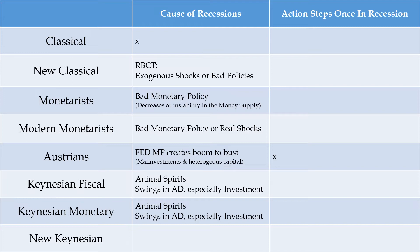Keynesian activist monetary policy advocates would say basically the same thing as the fiscal policy advocates — there's no real discrimination between those two schools of thought on causes. The new Keynesians keep those same Keynesian aggregate demand problems but add in the additional problem of sticky prices and sticky wages. Especially in the downward direction, prices have a hard time adjusting, and so we are likely to get stuck in a below full employment equilibrium where we have some kind of recession happening.